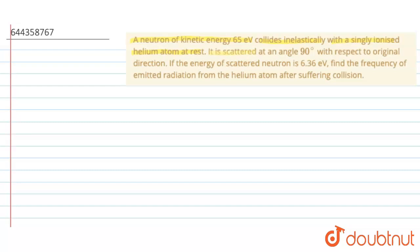A neutron is scattered at an angle of 90 degrees with respect to its original direction. If the energy of the scattered neutron is 6.36 eV, find the frequency of the emitted radiation from the helium atom after suffering the collision. This is a question based on collision — collision of a neutron and helium.